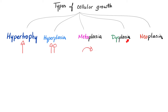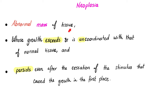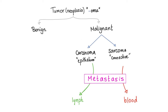Dysplasia means abnormal, dysfunctional growth. It's weird because this might turn into neoplasia. Neoplasia is the same as tumors, and tumors could be benign or malignant. Definition of neoplasia: abnormal mass of tissue whose growth exceeds and is uncoordinated with that of normal tissue, and it persists even after the cessation of the stimulus that caused the growth in the first place. Cancers are weird.